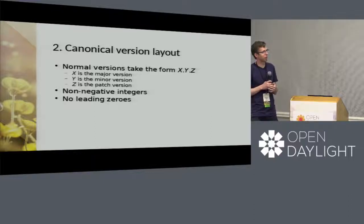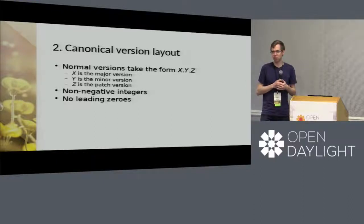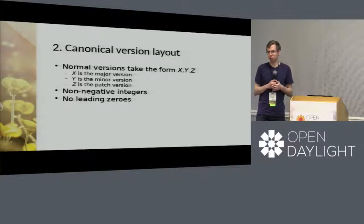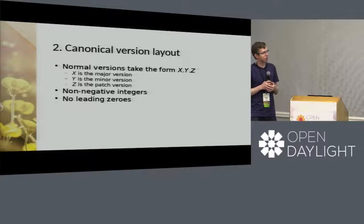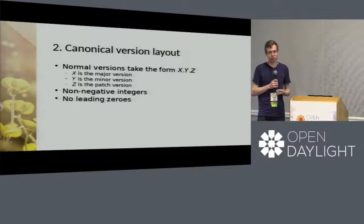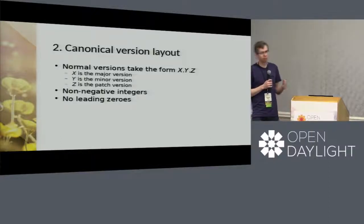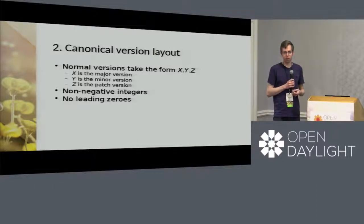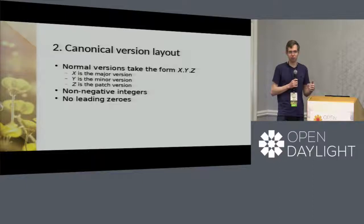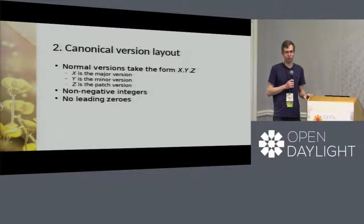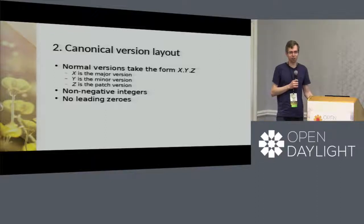The second point: semantic versioning defines a canonical version layout with three components — X, Y, and Z. X is the major version, Y is the minor version, and Z is the patch version. The rest of semantic versioning defines rules about how you change those components. All three components are non-negative integers starting with zero, but they can't have leading zeros — so 0.1.2.0 style is invalid. It avoids octal surprises.